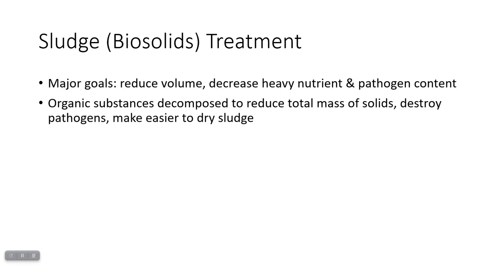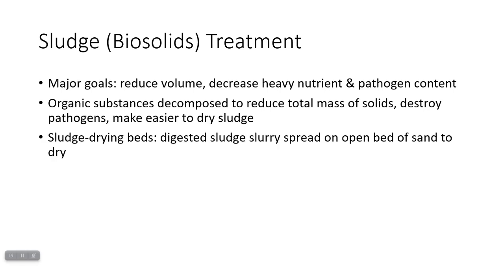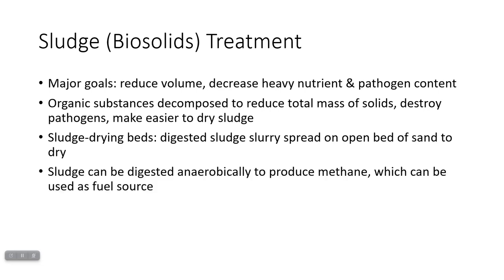You can also destroy pathogens and make it easier to dry the sludge. At that step, you've made something called stabilized sludge, which has a consistency more like rich soil and doesn't actually have the odor you might associate with sewage. You can then send some of this stuff to sludge drying beds, which take that sludge — kind of a slurry mixed with water — and spread it on an open bed of sand that will let it dry. This stuff can also be digested anaerobically to produce methane, which can be used as a fuel source.